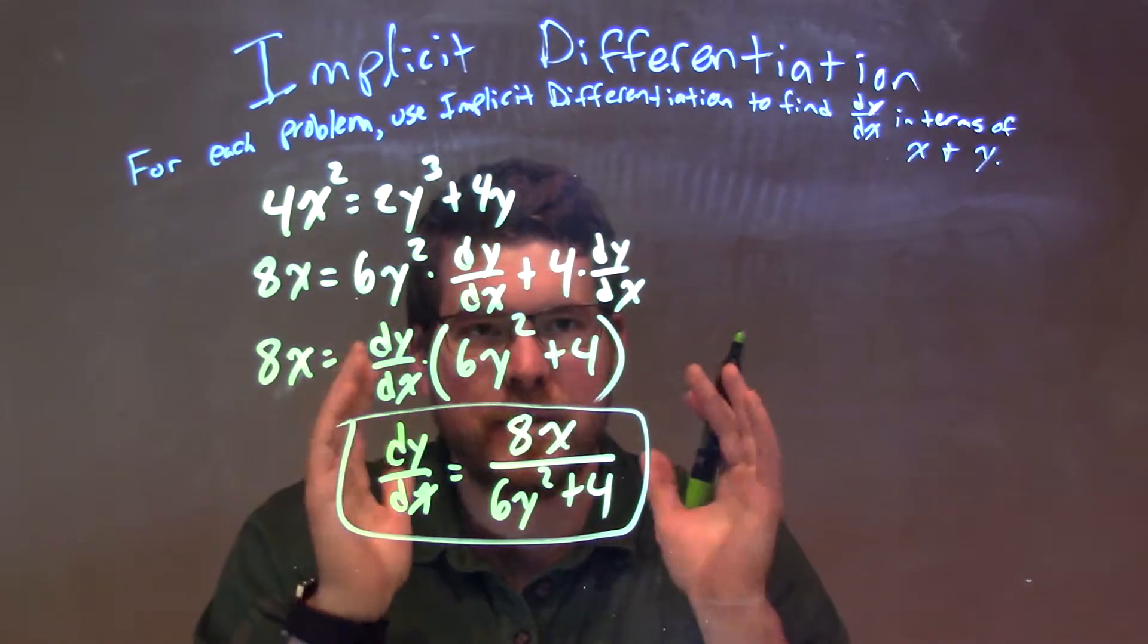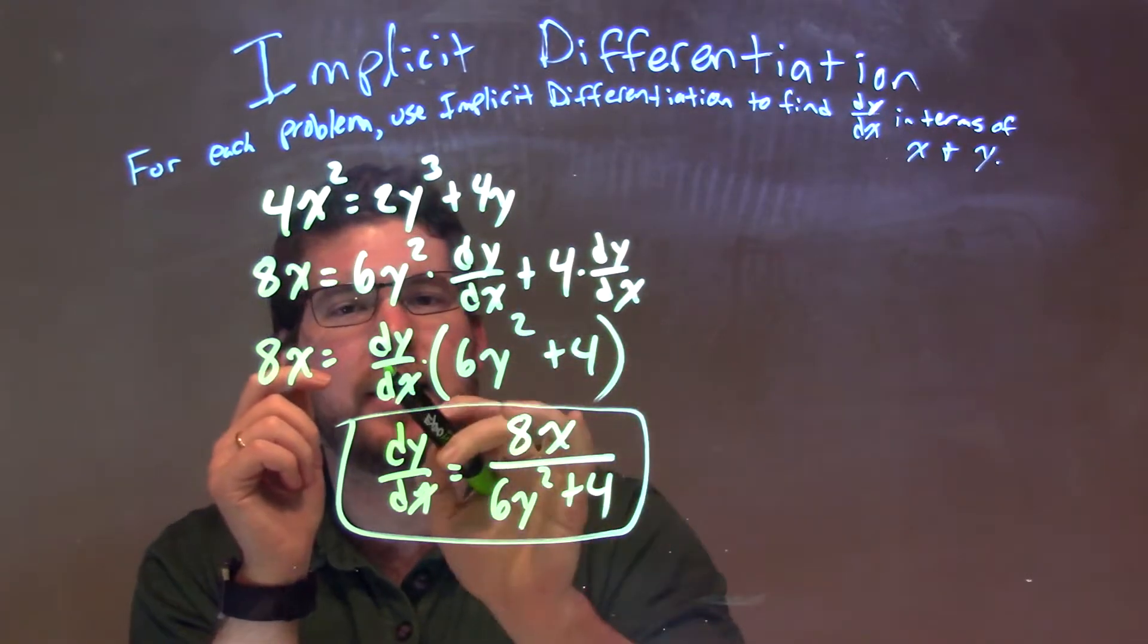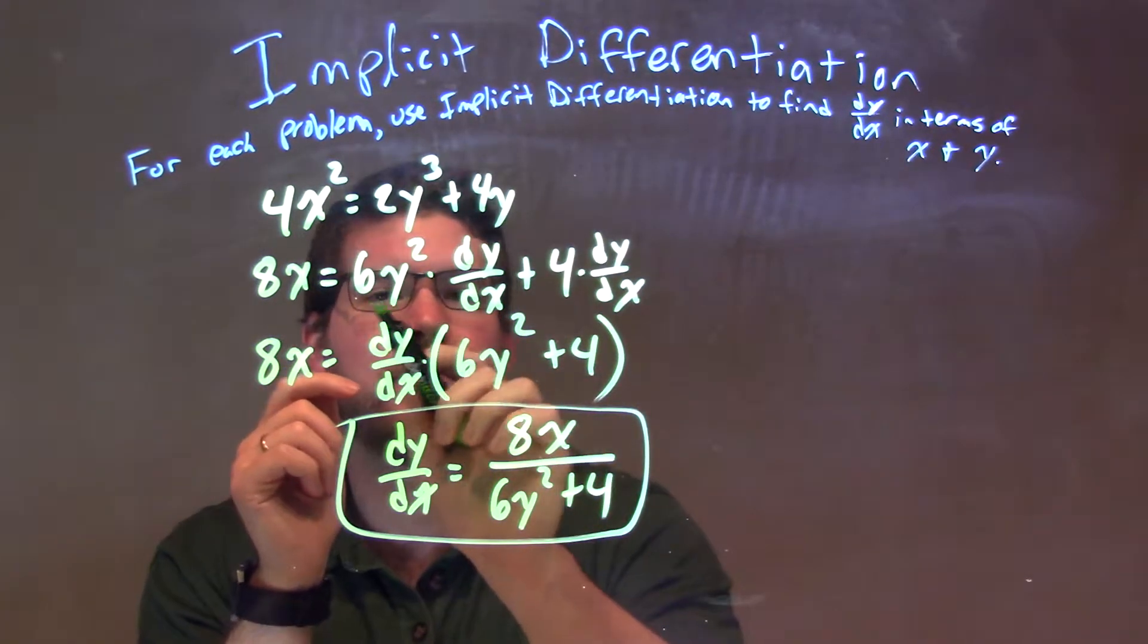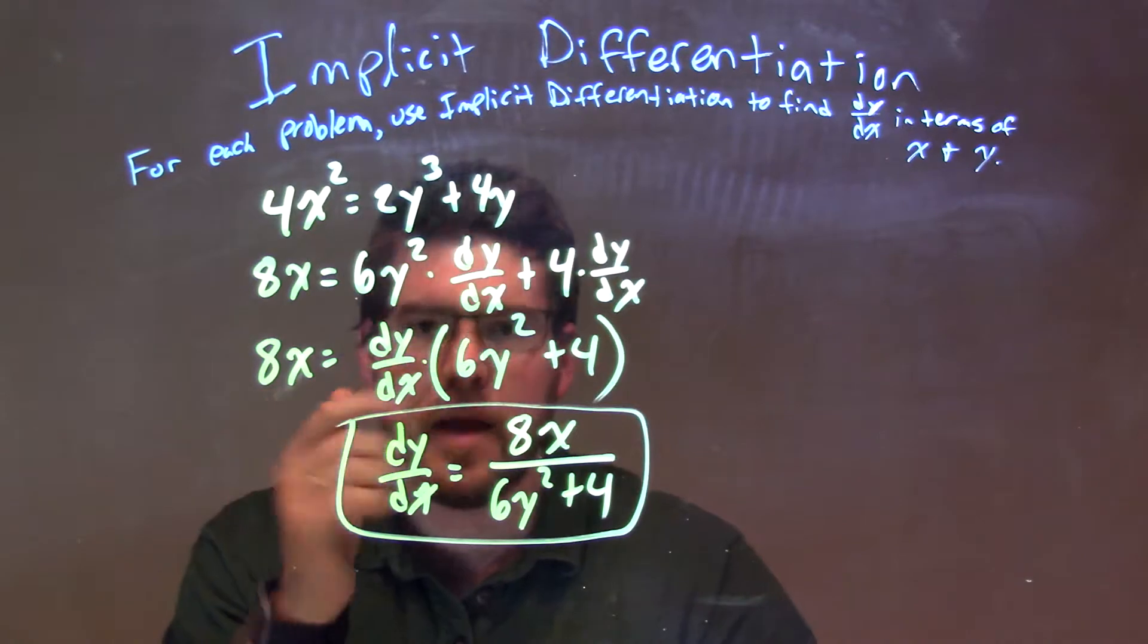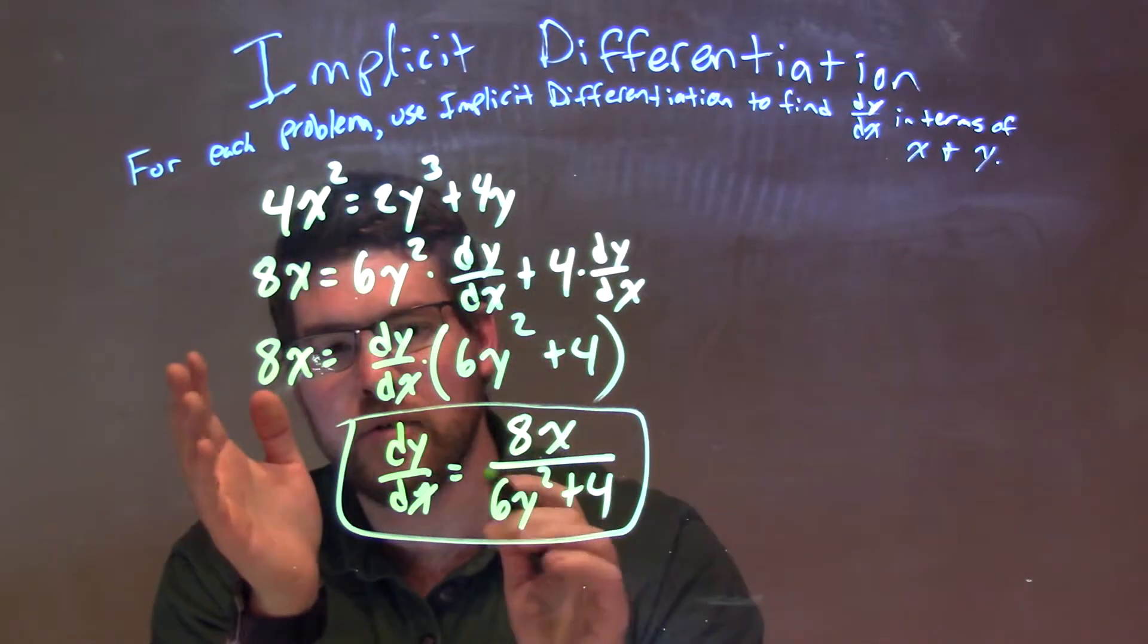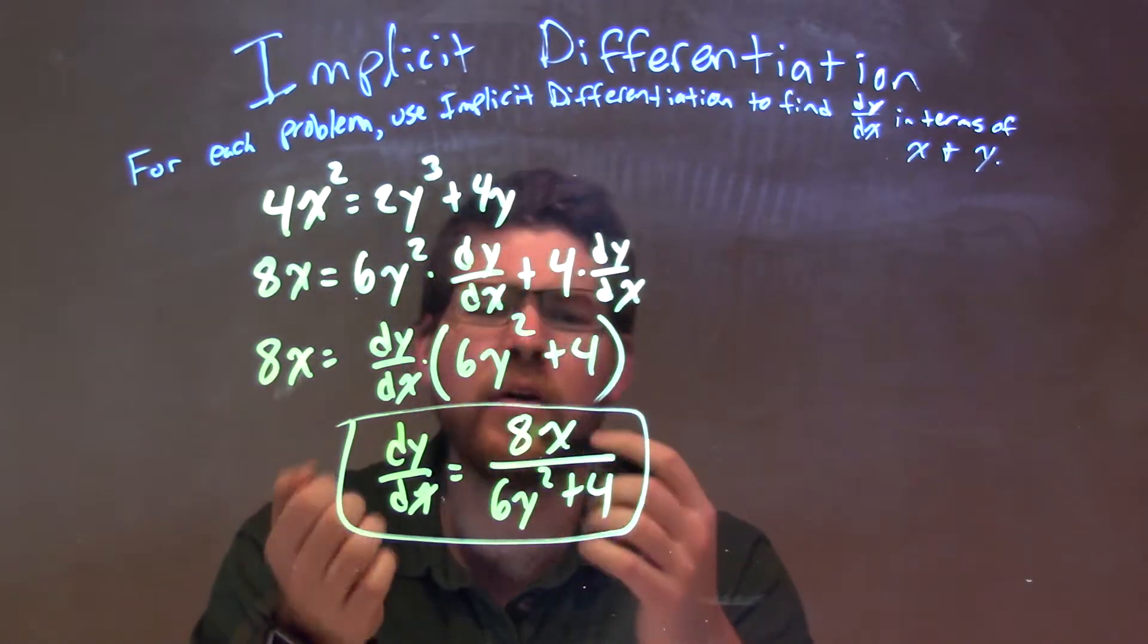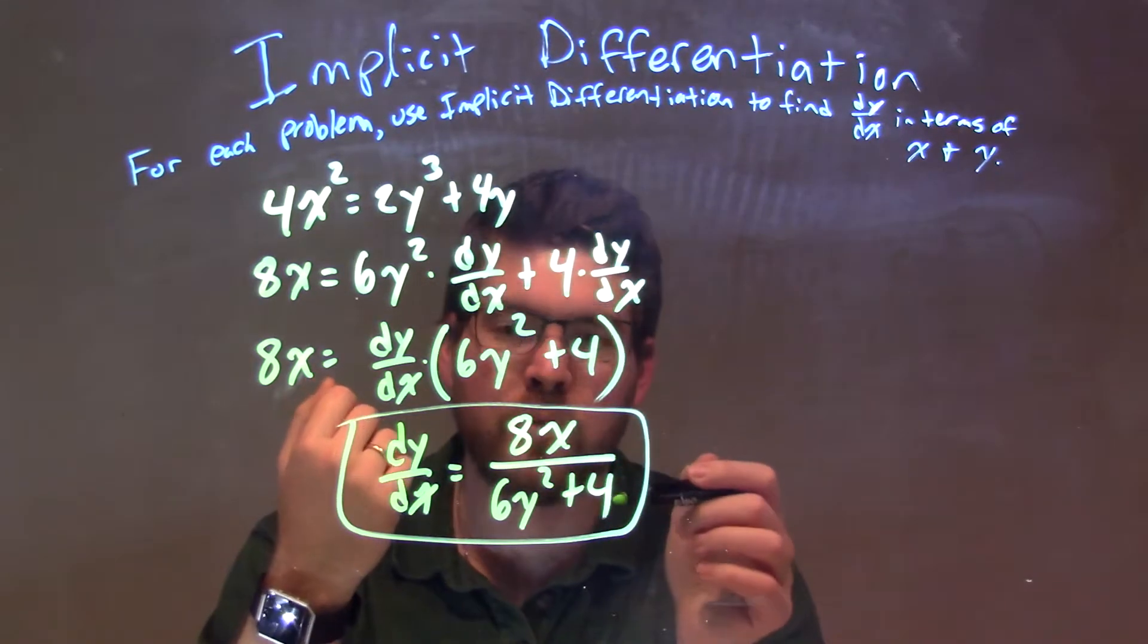Now, we're going to get dy/dx by itself, so using algebra, pull that dy/dx up front here, multiply by what's left, 6y squared plus 4. Divide that to both sides, leaving dy/dx by itself is equal to 8x over 6y squared plus 4.